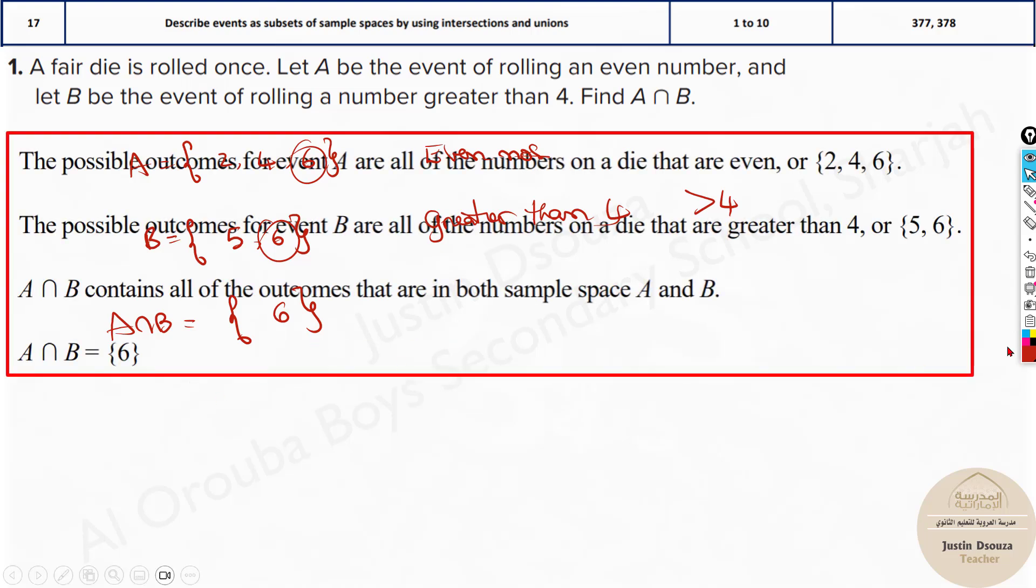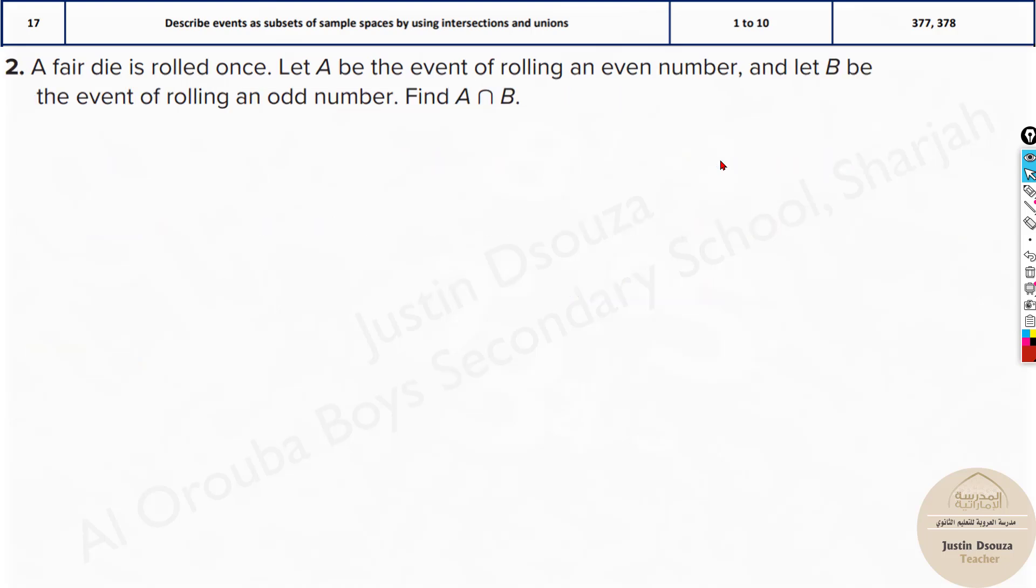So that is your answer. A intersection B is 6. And we can see the sample answer as well. They have written the same thing. The A intersection B means it contains both the outcomes of the sample space, outcomes from both.